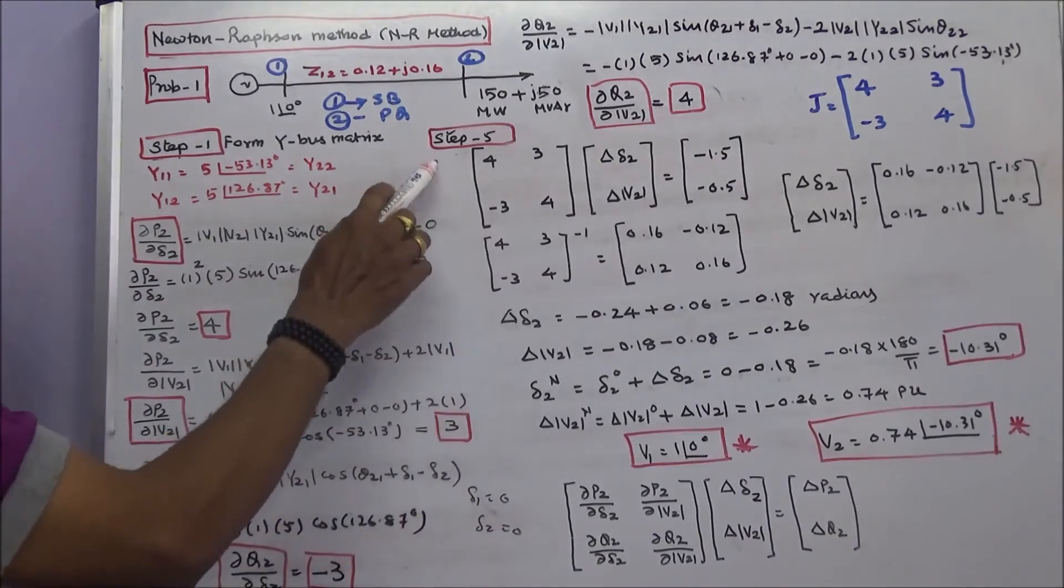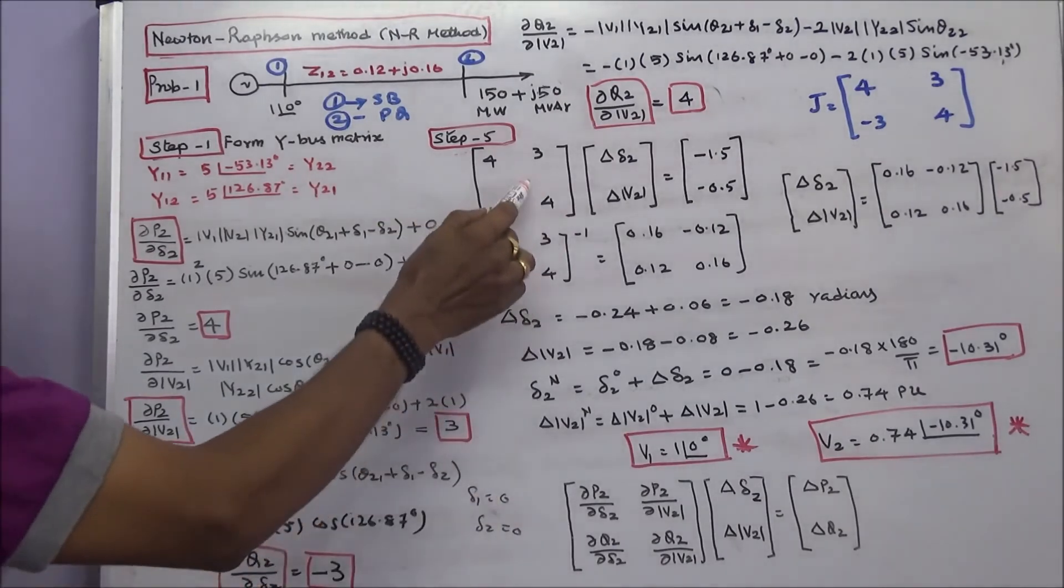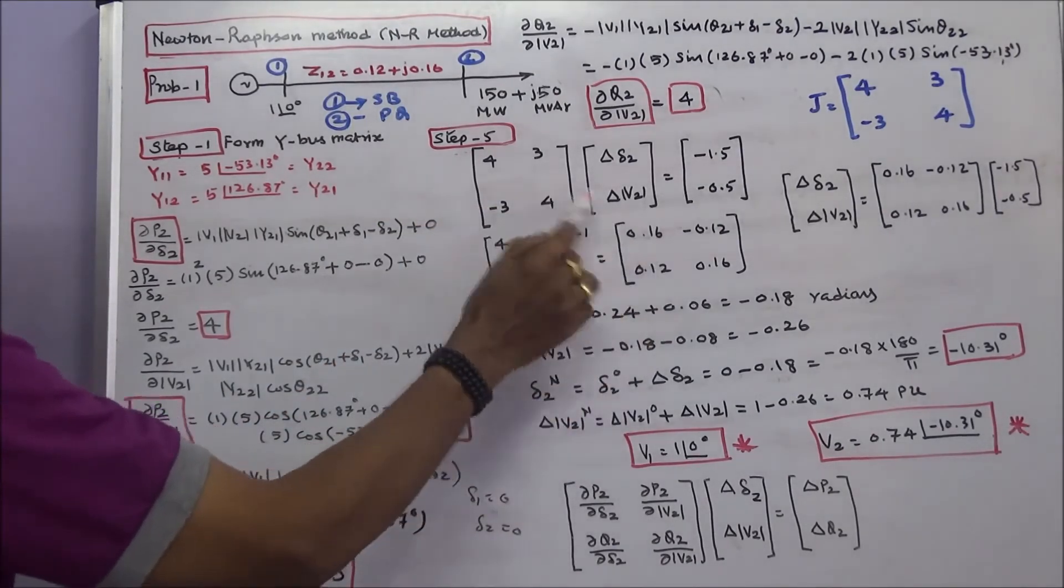Step 5. I rewrite the matrix like this. Next, I have to find the inverse of this matrix. This is the inverse of this matrix.